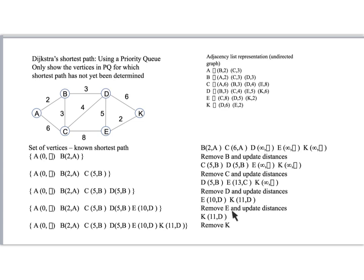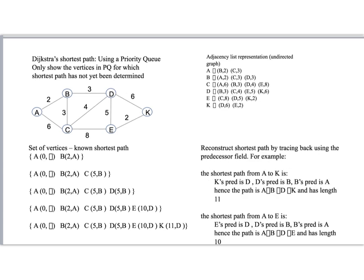Then we remove E, update the distances. Nothing happens because there's no shorter distance. I won't go through that. And then finally remove K. So we have this set of shortest paths, which is implicit in here. In the next slide, I'll talk about how to reconstruct the shortest paths. Most of this slide you've seen already on the last slide. Here's the new stuff down here.